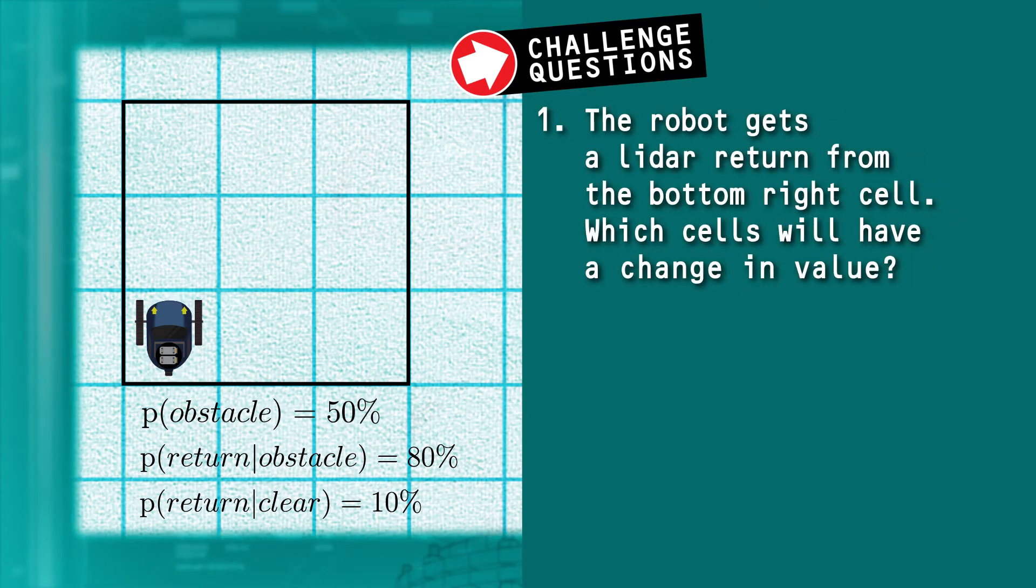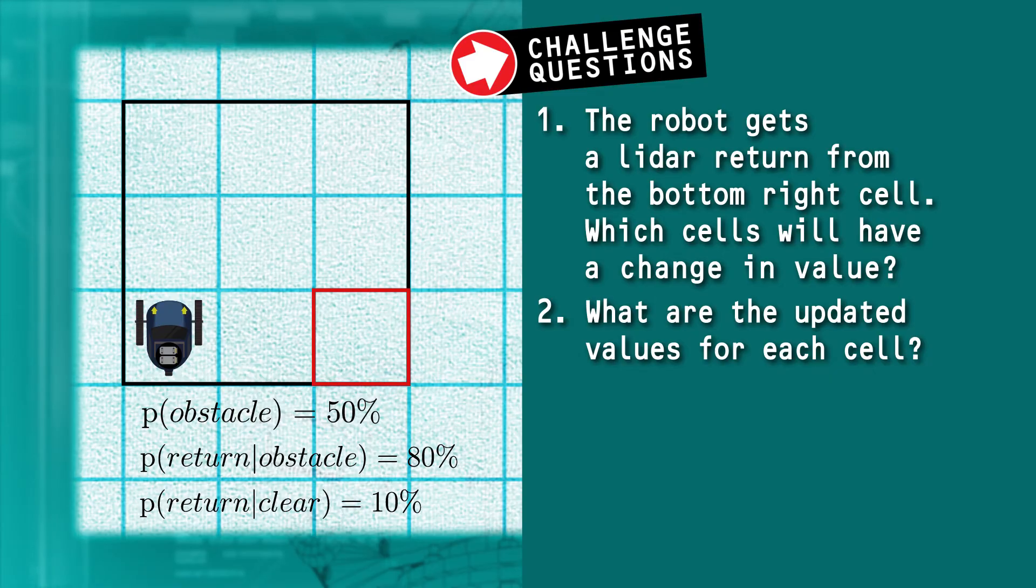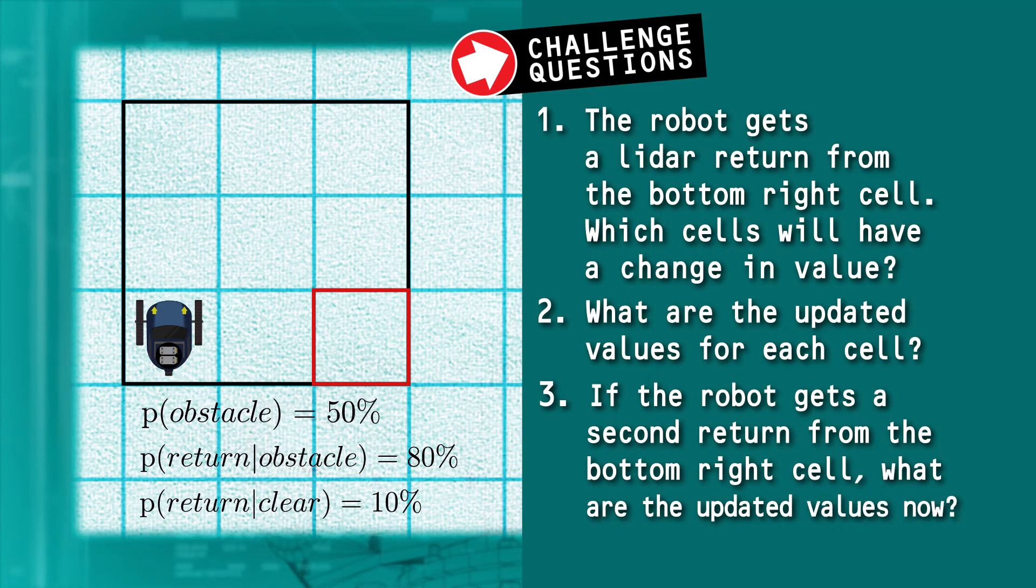Question 1. The robot gets a LIDAR return from the bottom right cell. Which cells will have a change in value? Question 2. What are the updated values for each cell? Question 3. If the robot gets a second return from the bottom right cell, what are the updated values now?